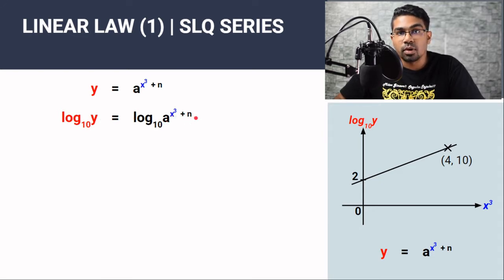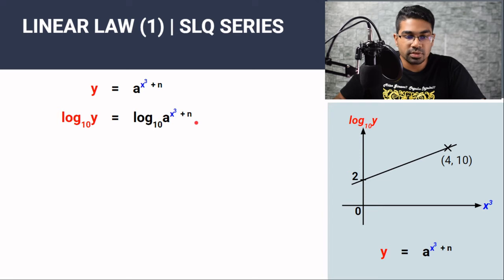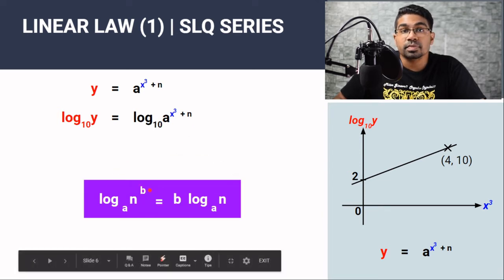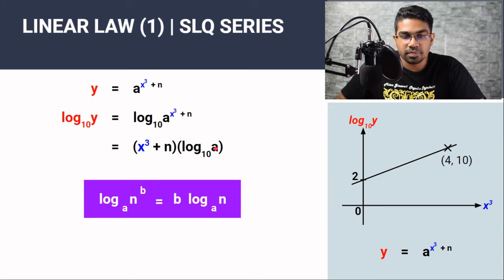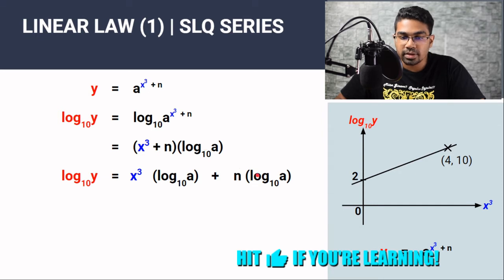Now we need to use some law of logarithms. I've done a video on law of logarithms. The video link is in the corner. So here we use this law. We can take the power and put it in front as a multiple. So here the power is x³ plus n. So we can bring this to the front as a multiple. This will become x³ plus n, which is the power, multiplied by log₁₀a. And now we can open bracket. When we open bracket, we must multiply each term with log₁₀a. So we get x³ times log₁₀a plus n times log₁₀a.